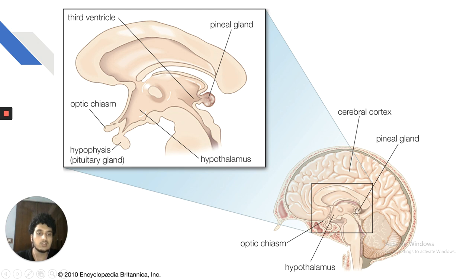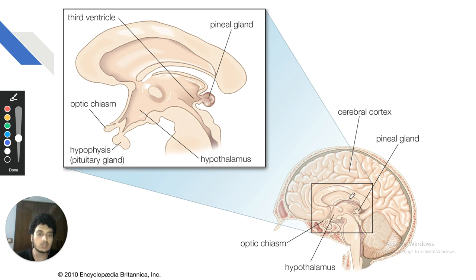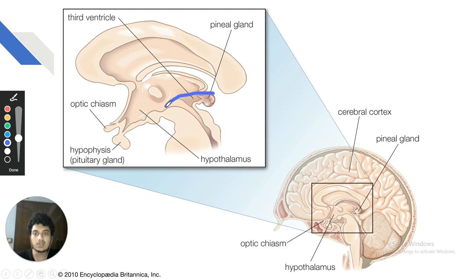The pineal gland is located just lateral to the third ventricle, just above the midbrain. When the pineal gland tumor enlarges and compresses the tectum of the midbrain, it leads to Parinaud syndrome. The pituitary gland or hypophysis is located anteriorly — whenever the pituitary enlarges, it compresses the optic chiasma, causing bitemporal hemianopia.